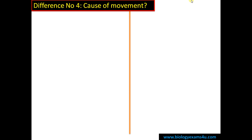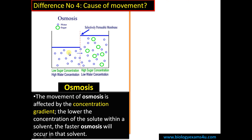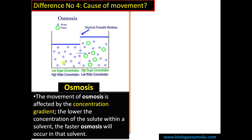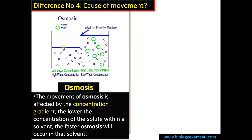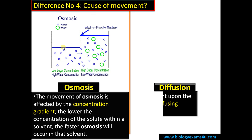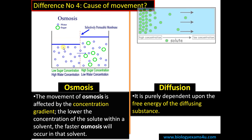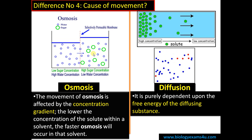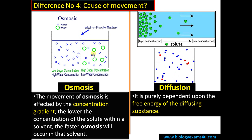Difference number four is regarding the course of movement. In the case of osmosis, it is affected by the concentration gradient. The lower the solute concentration — or the higher the water potential — the higher the amount of free water, and the faster the rate of osmosis. In the case of diffusion, it is purely dependent upon the free energy of the diffusing substance. In the case of gas it will be very rapid, in the case of liquid comparatively slow, and in the case of solid very slow. It is all about the free energy of the diffusing substance.